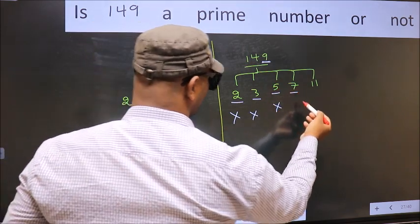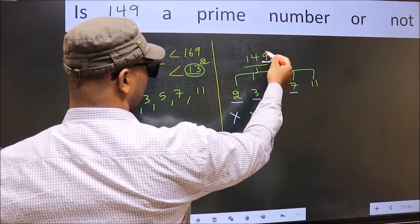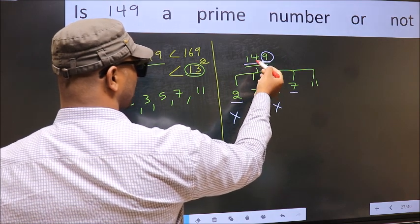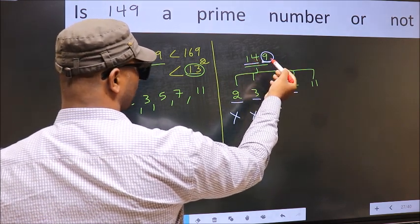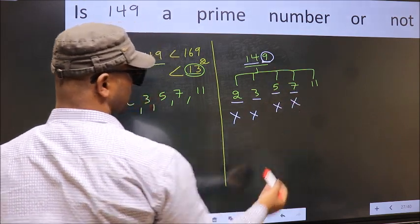Next number 7. To check divisibility by 7, double the last digit: 9 into 2 is 18. Subtract from the remaining number: 18 minus 14 equals 4. 4 is not divisible by 7, so this number is not divisible by 7.